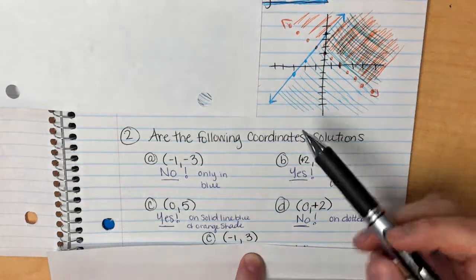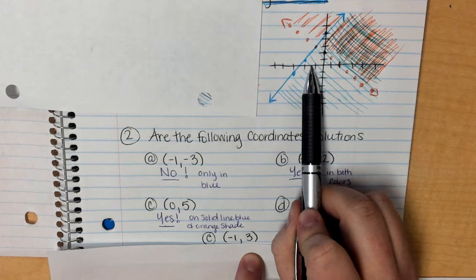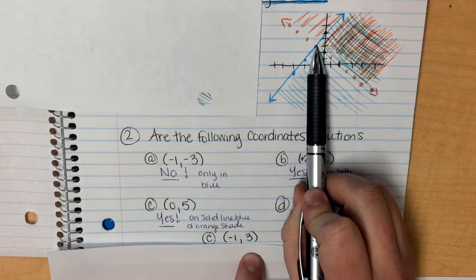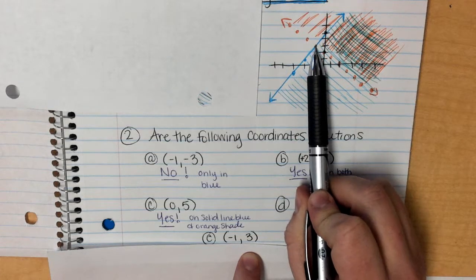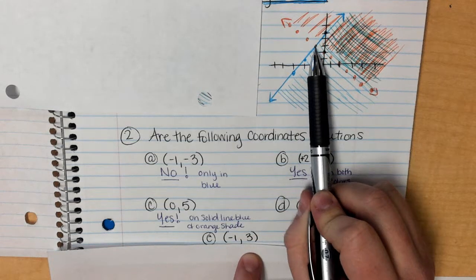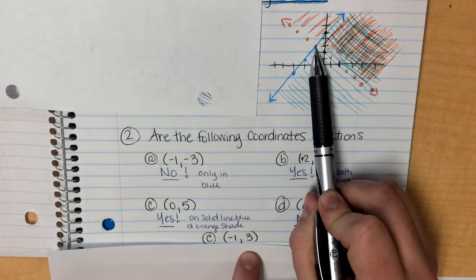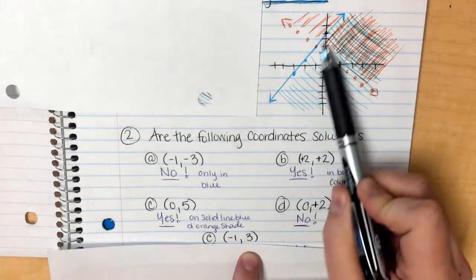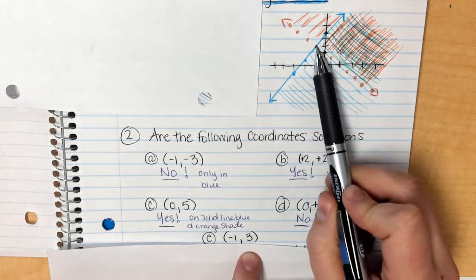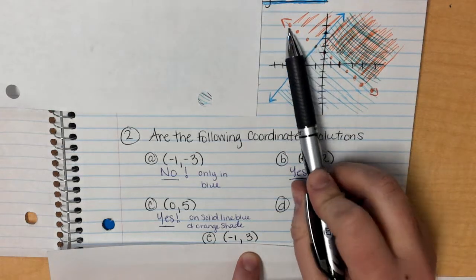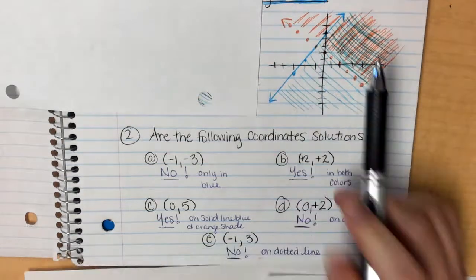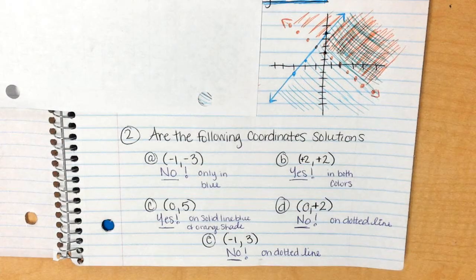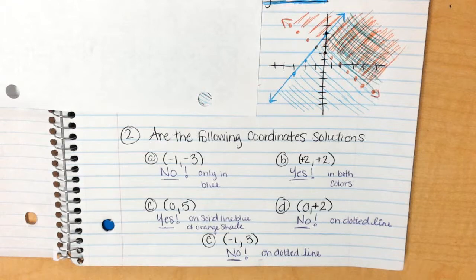Last but not least is my point negative 1, 3. So I go over negative 1, I go up 3, and that's right here, this intersection point. So the instinct is to say yes because that's where they intersect. But remember, dotted lines are not solutions. So the blue line is a solid line, which is a yes, so he's a solution for the blue. But since it's on the dotted orange line, he is not a solution. So therefore he is not a solution to the system. If you have any questions, please feel free to come and see me.